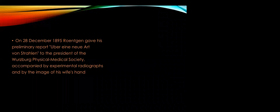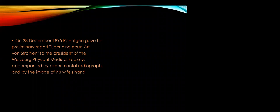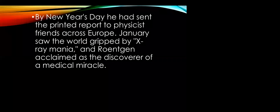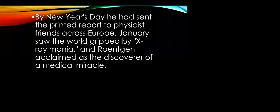The Würzburg Physico-Medical Society was the first to hear about these new X-rays which could penetrate the body and photograph the bones. This discovery was huge at the time. On 28th December 1895, Röntgen gave his first preliminary report — 'Über eine neue Art von Strahlen' — to the president of the Würzburg Physical Medical Society, accompanied by his experimental radiographs and the famous image of his wife's hand. By New Year's Day, he had sent a printed report to physicist friends across Europe. Everybody now knew the word X-rays, and the world was gripped with X-ray mania.